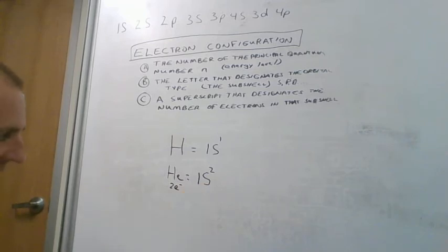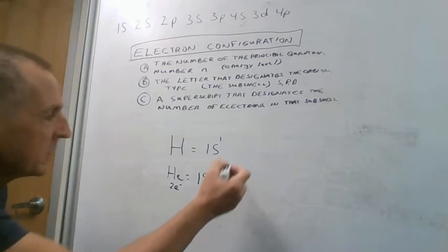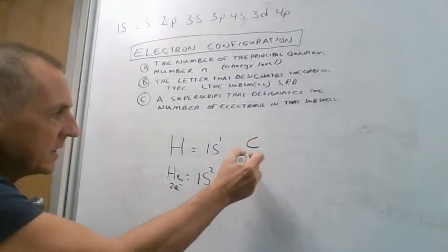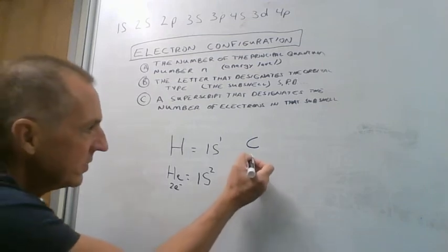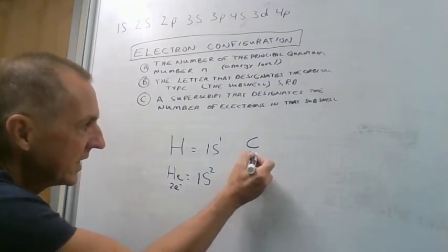And we could continue that with all of the elements, so let's look at a couple more. If we have carbon, carbon is element number six, right? So it has six protons in its neutral state, it has six electrons.